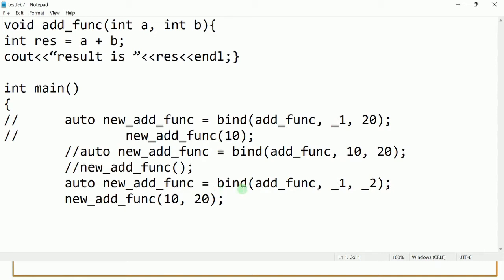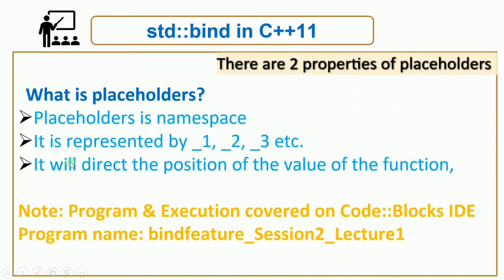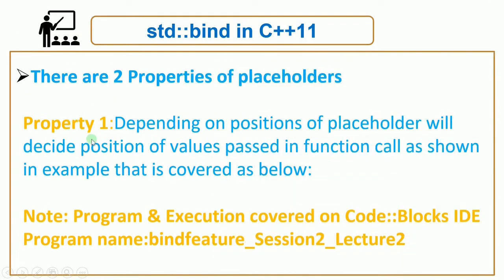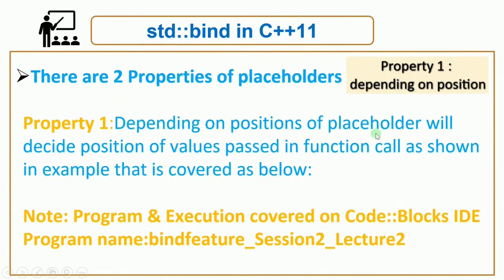So that is one property. The second property we will be seeing — there are two properties. Property one is: depending on the position of the placeholder, we will decide the position of the value to pass in the function call.